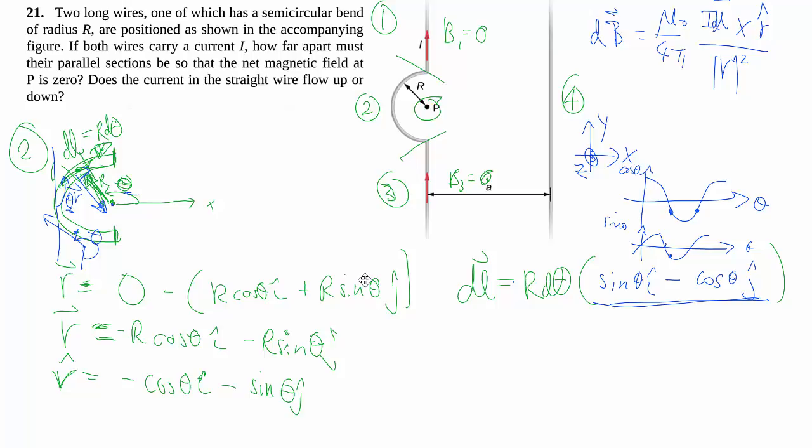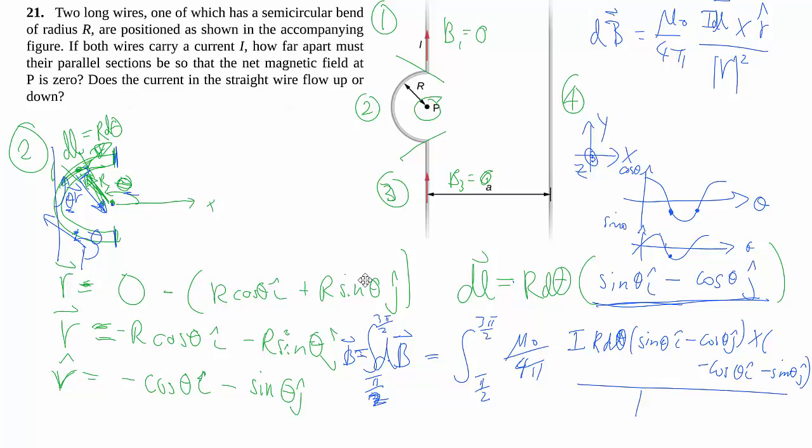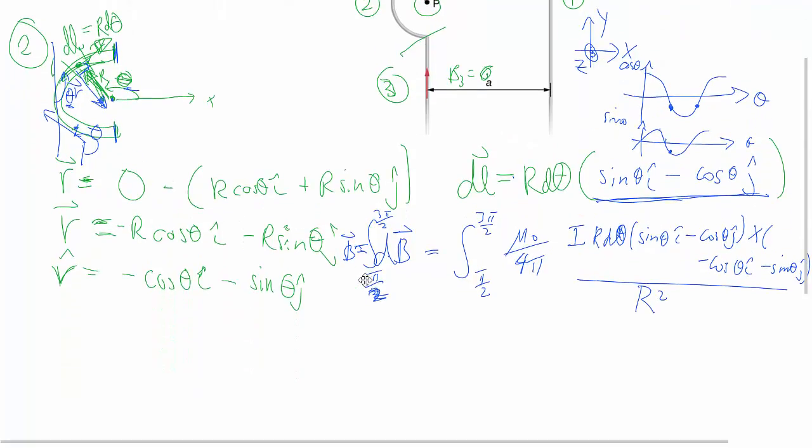Now that we've done all that, we can finally put it in to my db, or we can speed ahead and even write out the integral. Limits of integration, of course, goes from pi over 2 to 3 pi over 2. And what do we have? We have the constants, which can of course come out. Current, same for all the points, dl is r d theta, r being the same for every single point as well. We have sine theta i minus cosine theta j, cross with minus cosine theta i minus sine theta j, all over my r square, which is just r square. Let's get a little more space here.